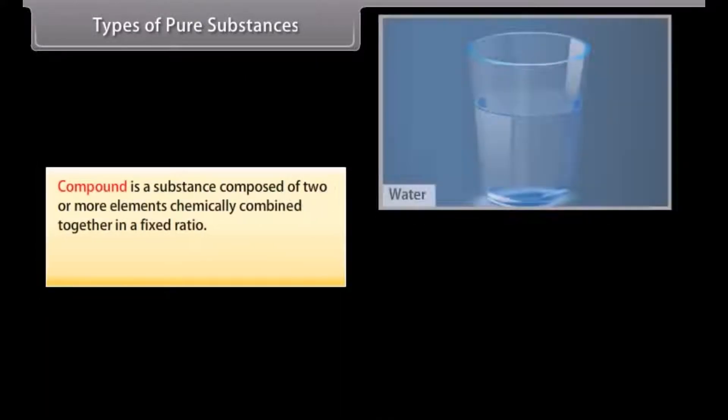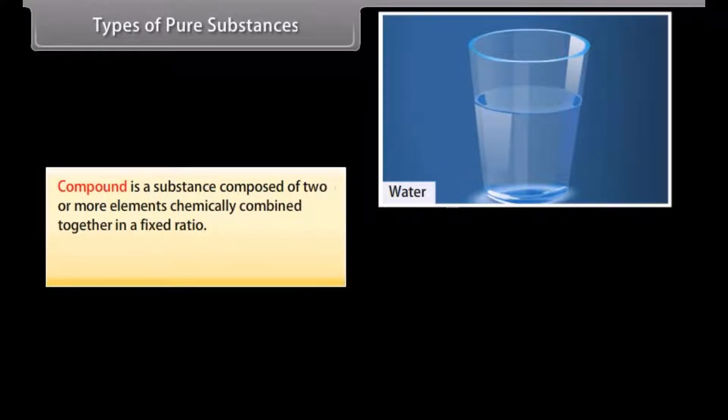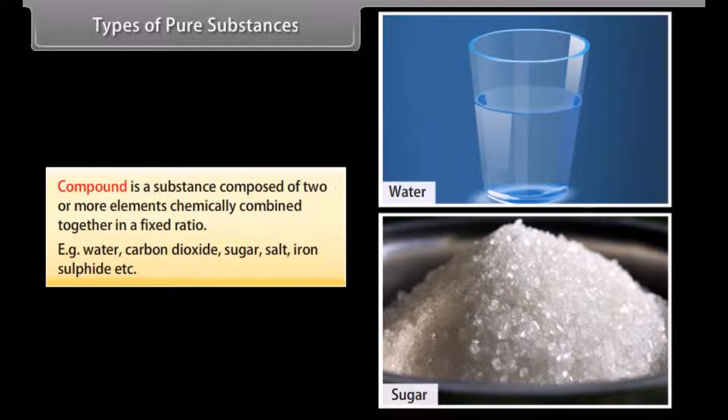Compounds. A compound is a substance composed of two or more elements chemically combined together in a fixed ratio. Examples include water, carbon dioxide, sugar, salt, iron sulfide, etc.